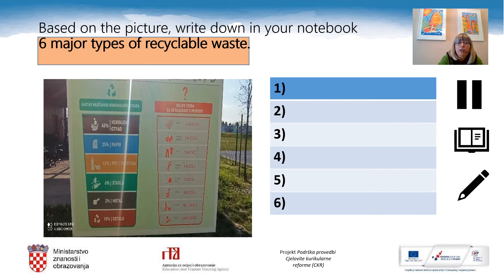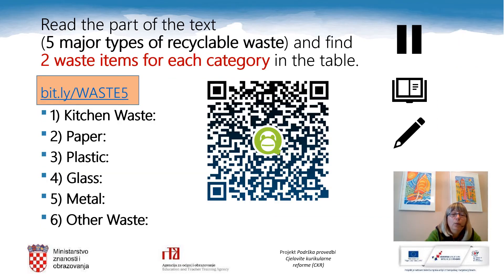In this activity, based on the picture, write down in your notebook six major types of recyclable waste. Please observe the picture carefully and write them down. Now, when you have them in your notebooks, please read the text 'Five Major Types of Recyclable Waste' and find two waste items for each category in the table: two for kitchen waste, two for paper, two for plastic, two for glass, two for metal, and two for other waste. For this activity, copy the link bit.ly/waste5 into your browser.